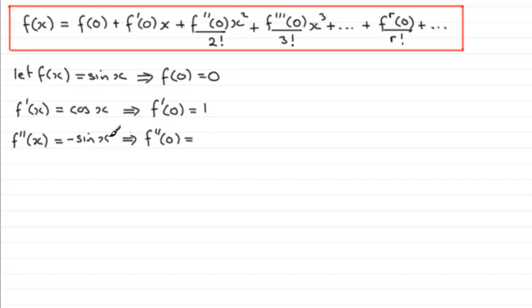We now need to find the third differential, so differentiating minus sine x gives us minus cos x. Again, if we substitute x is 0 into here, minus the cosine of 0 gives us minus 1.